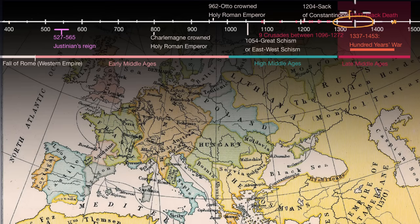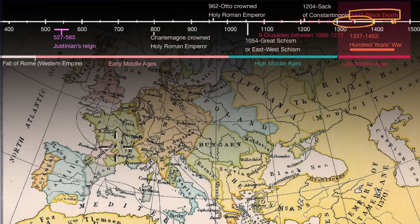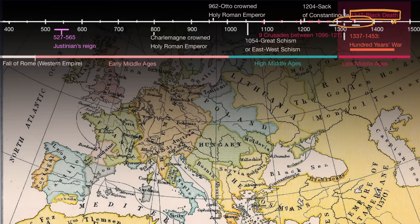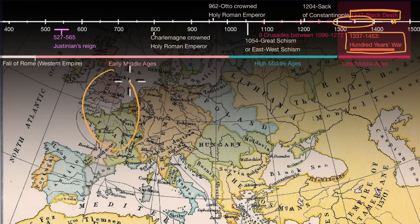What the Late Middle Ages is most known for is being not a pleasant time to live in Europe. In 1347, you have the Black Death, which by some estimates kills 50 million people in Europe — roughly 60% of the population at the time. It's also a time of famine; weather cycles get worse, and even before the Black Death you have a significant famine occurring in the 14th century. Between 1337 and 1453, you have the Hundred Years' War between France and England, which lasts over 100 years. Once again, not a pleasant time to live in especially Western Europe.